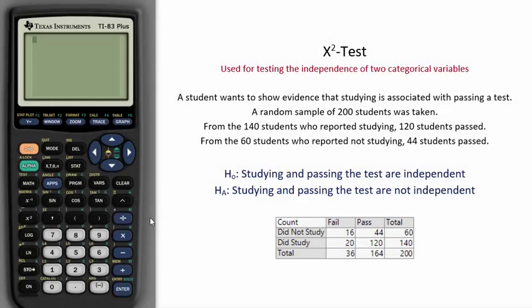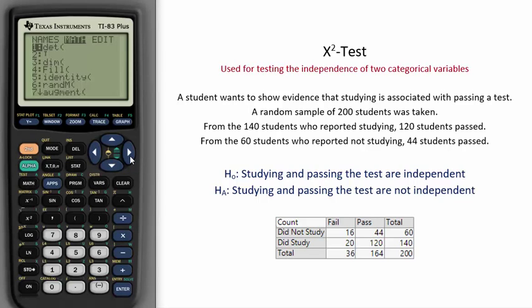The Chi-squared test of independence is used for testing the independence of two categorical variables. To perform this test on the TI calculator, we must first enter in the matrix by going to 2nd and then Matrix. Go to the right and edit Matrix A.